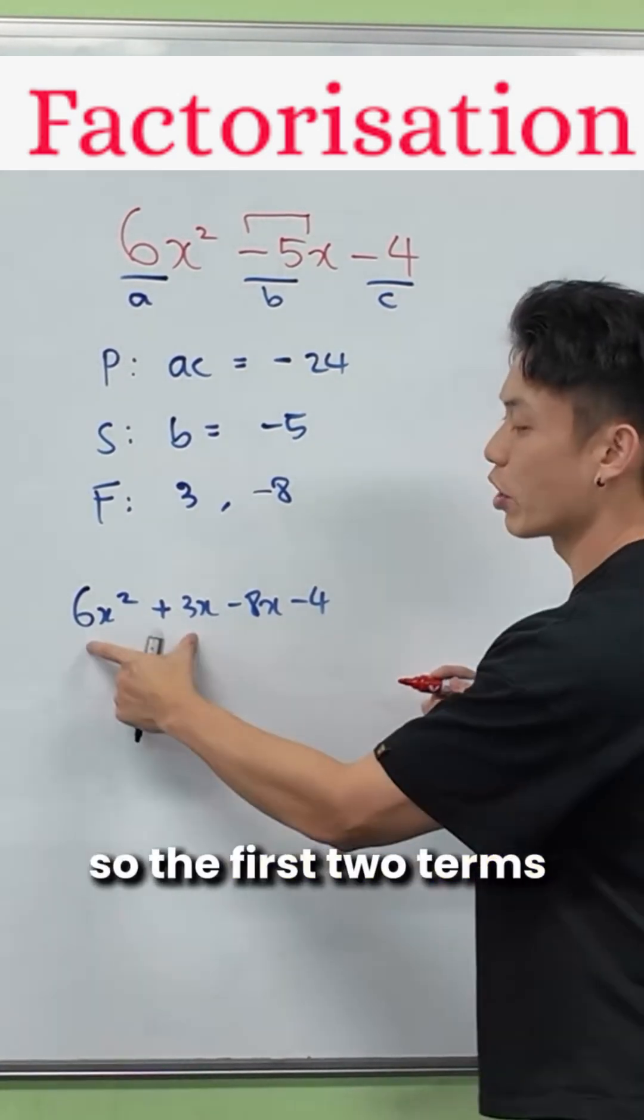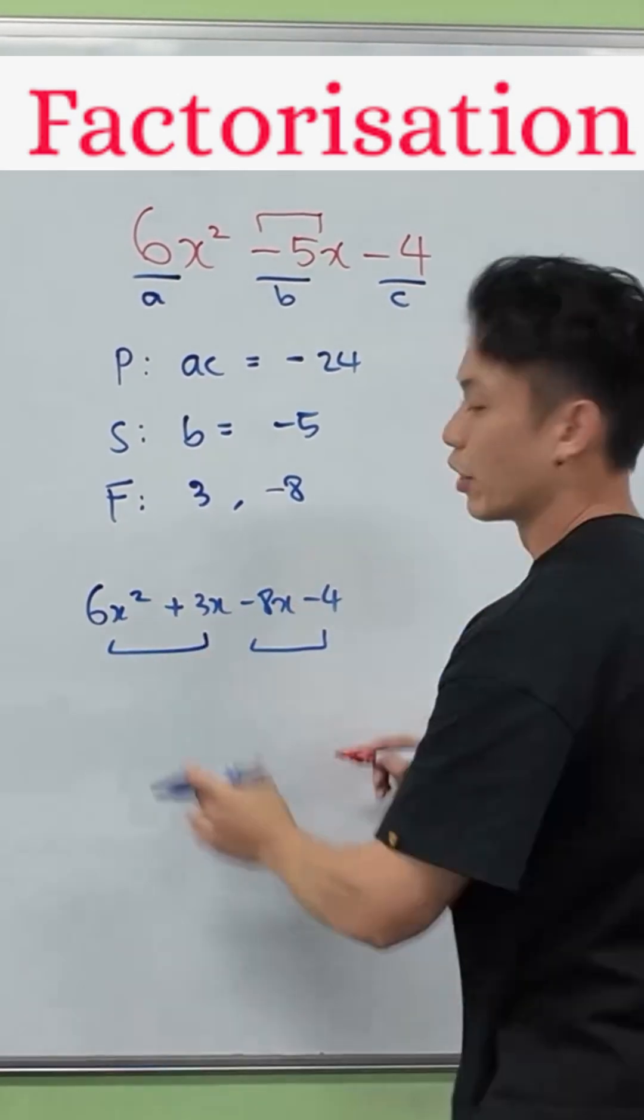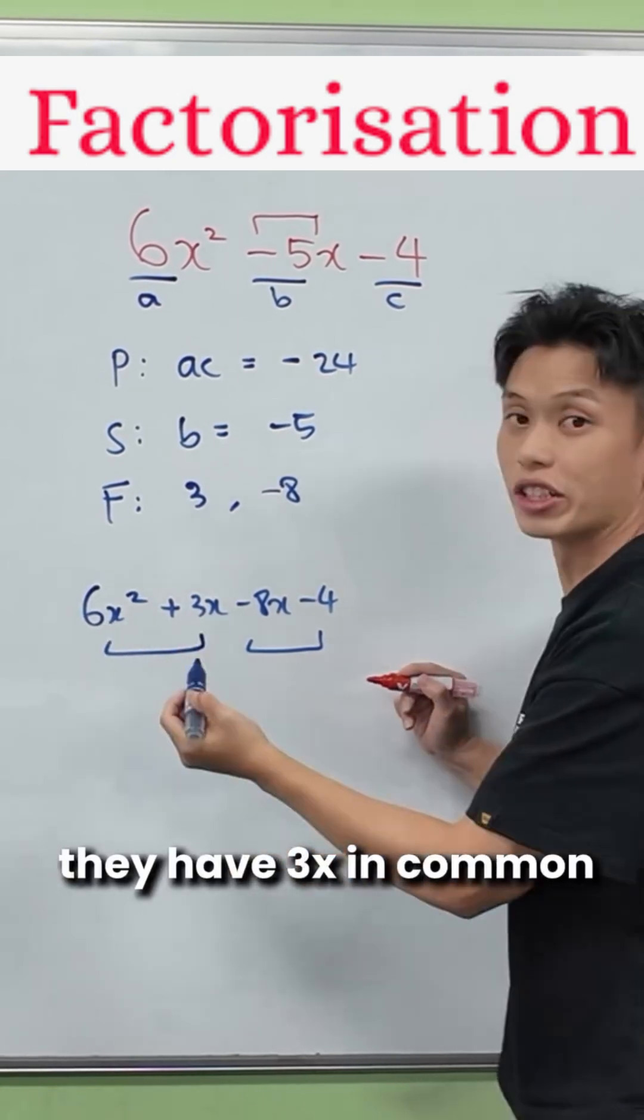We will now factorize in pairs, so the first two terms and the last two terms. The first two terms, they have 3x in common, so we will take that out.